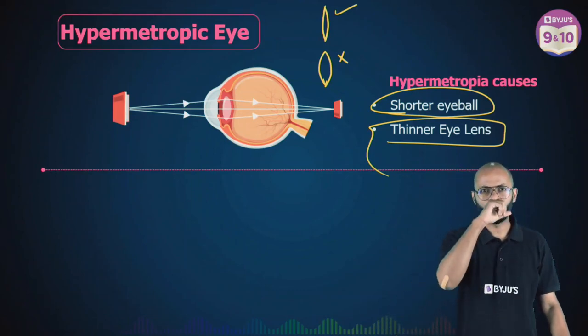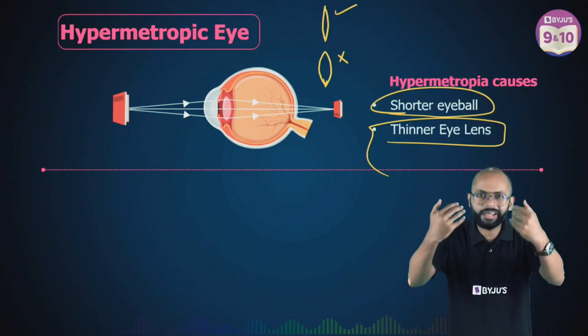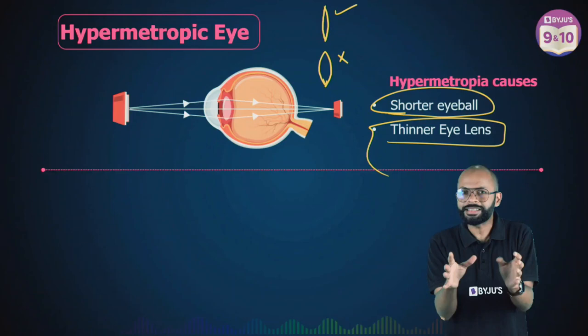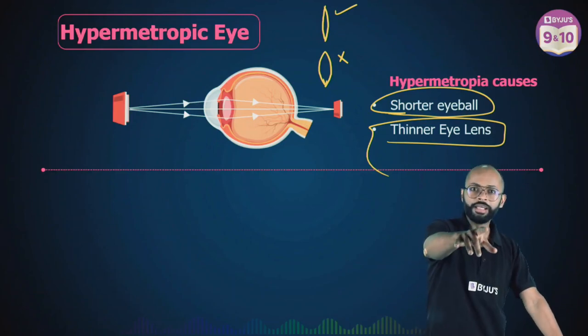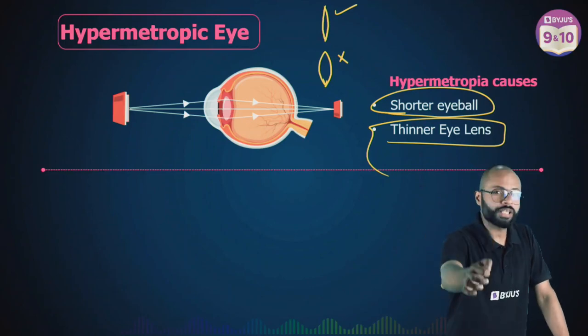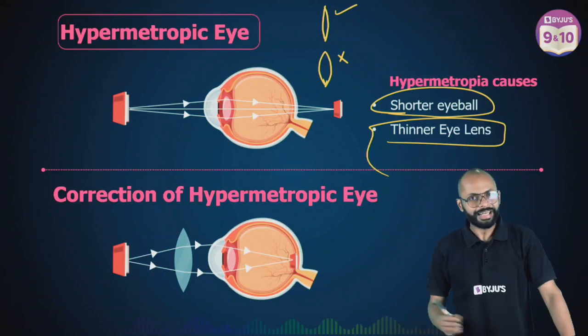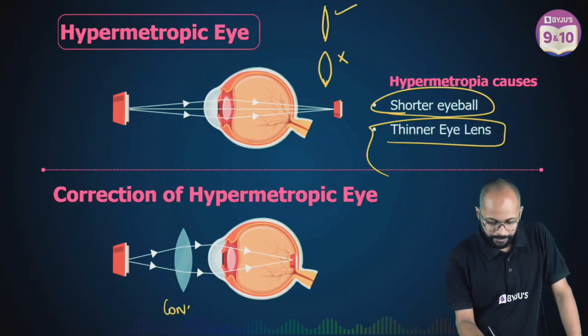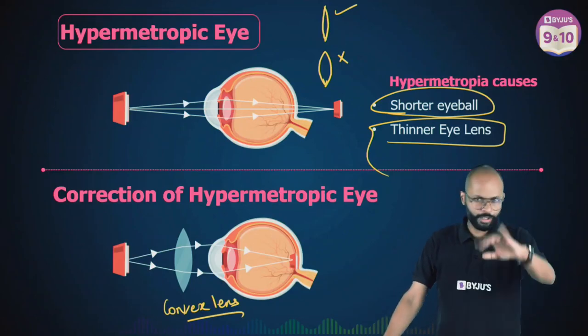Think about it. What's the problem? The lens is not able to converge properly. It needs to converge more but it's doing less. The lens is converging less. What do you want? It needs help in converging. It needs help to converge the light. Which lens will be used? Convex lens. The corrective lens would be a convex lens. For hypermetropia, you need a convex lens.